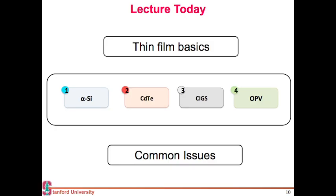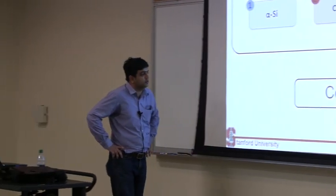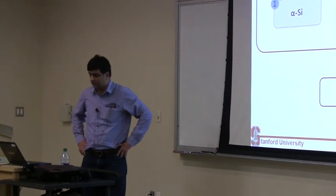So this is what I want to cover today: thin film solar. I want to cover a few basics of thin film technology, then delve into four main variants where most of the action is: amorphous silicon, cadmium telluride, CIGS cells, and organic PV. Then try to identify some common issues with all four.